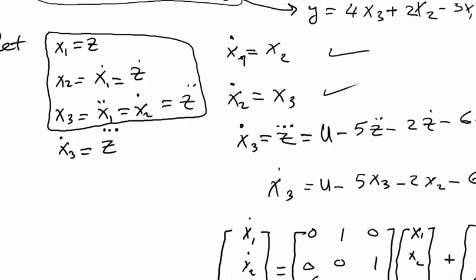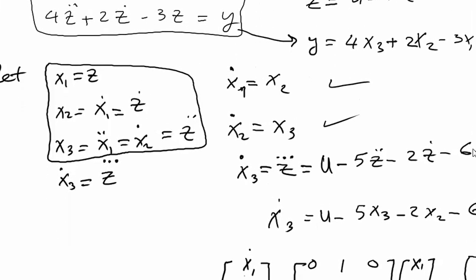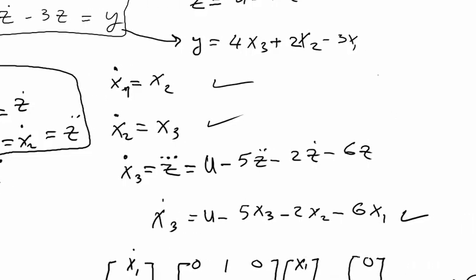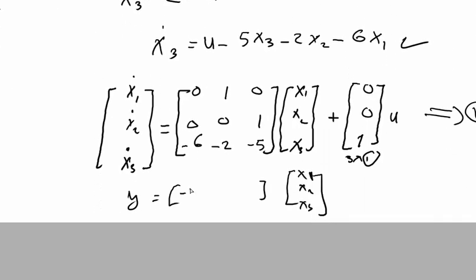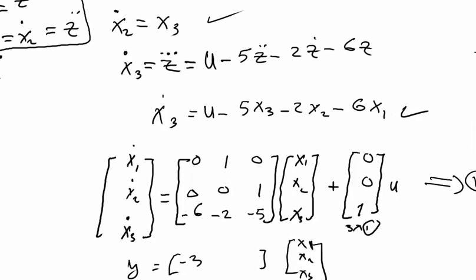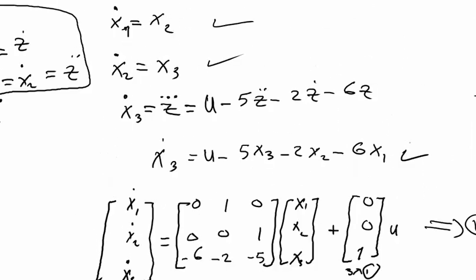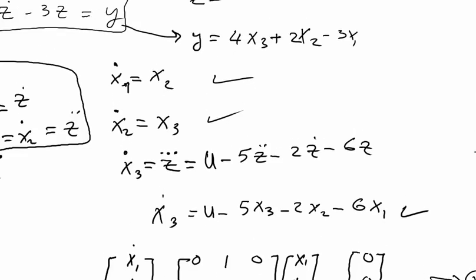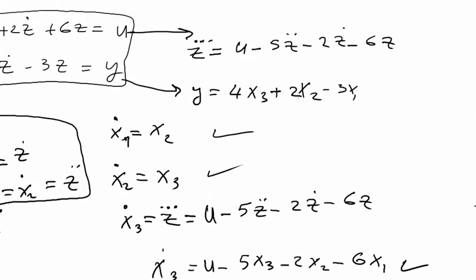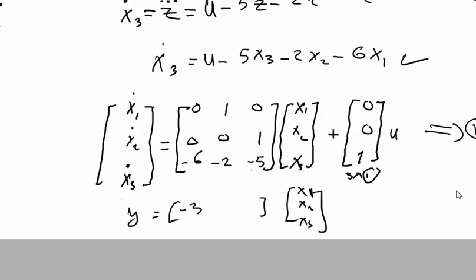So we have this equation: it's minus 3x1, and x2 will be 2, and 4. So [-3 2 4], and this is our equation. We made it in the state space form.